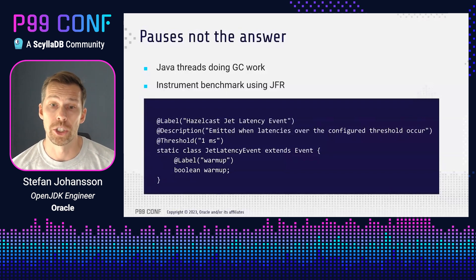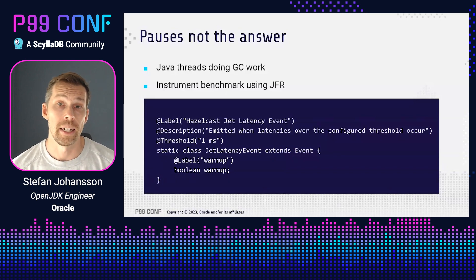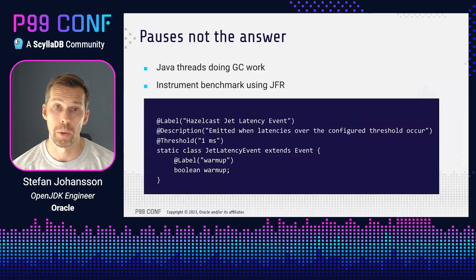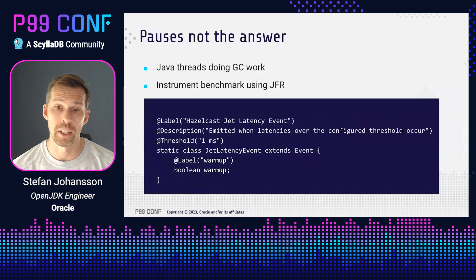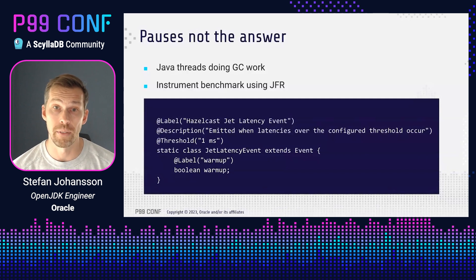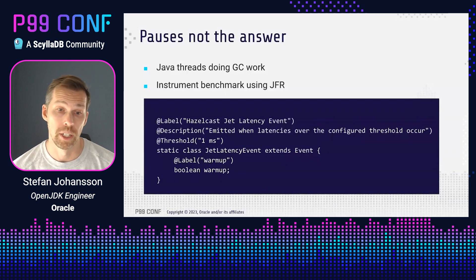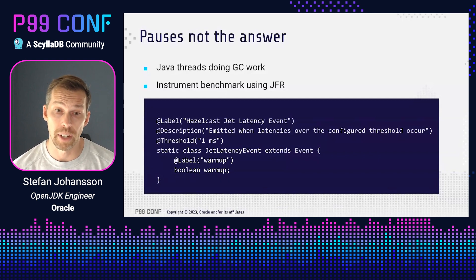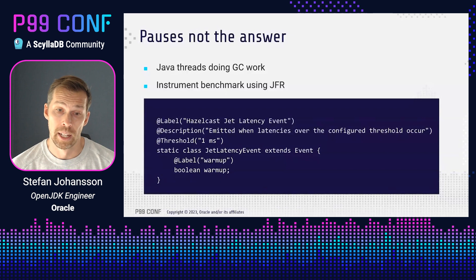Looking back at the results, some of the difference between JDK 20 and the legacy mode is actually due to removing this additional safepoint. But the pauses don't seem to answer why generational ZGC is so much better compared to the legacy mode. Another theory might be that the Java threads are helping out doing GC work, because this can happen with a concurrent GC. To see if this is the case, I instrumented the benchmark using JFR, adding a custom JFR event to the event stream to see if there are any hiccups when the event stream tries to make progress.